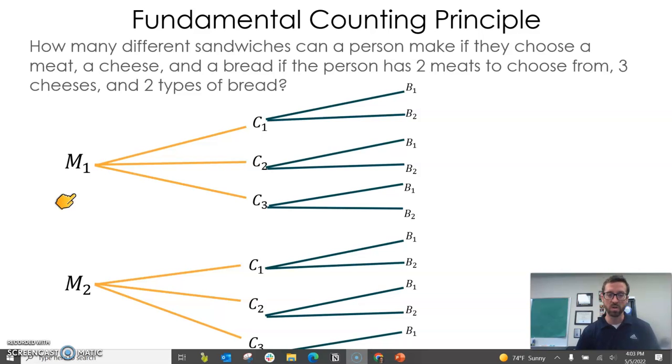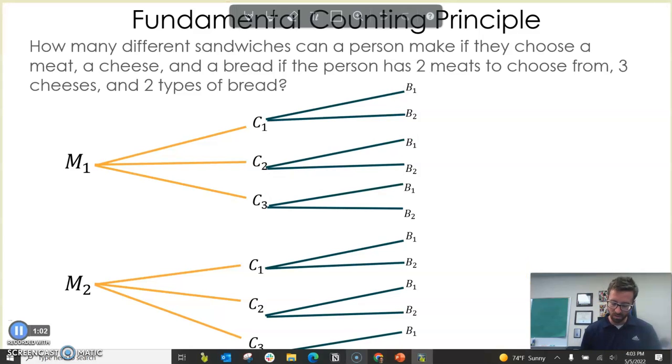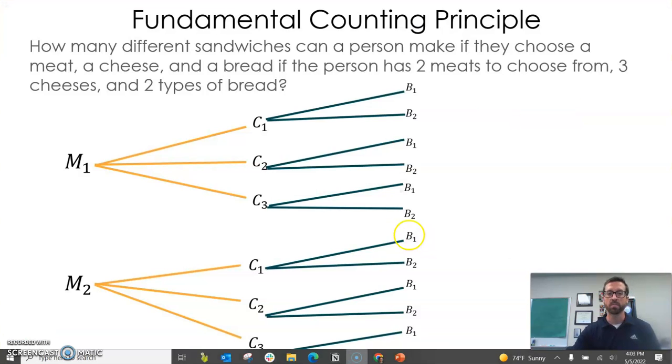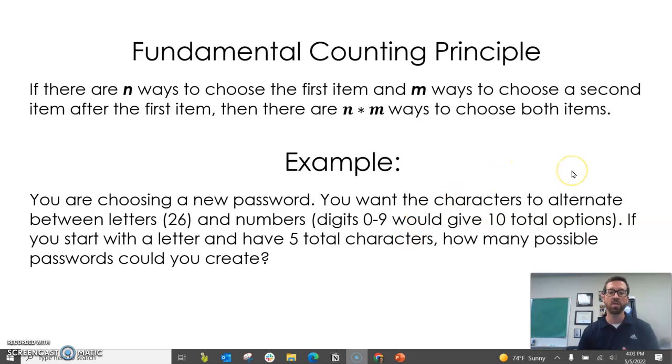But then within each of these outcomes, they have two types of bread to choose from. You can see how we calculate the total numbers. We do two times three times two. That would be 12. And if you counted these over here, there would be 12 total sandwiches they could make. This is called the fundamental counting principle. If there are n ways to choose the first item and m ways to choose the second item, then there are n times m ways to choose both items. You just multiply them.